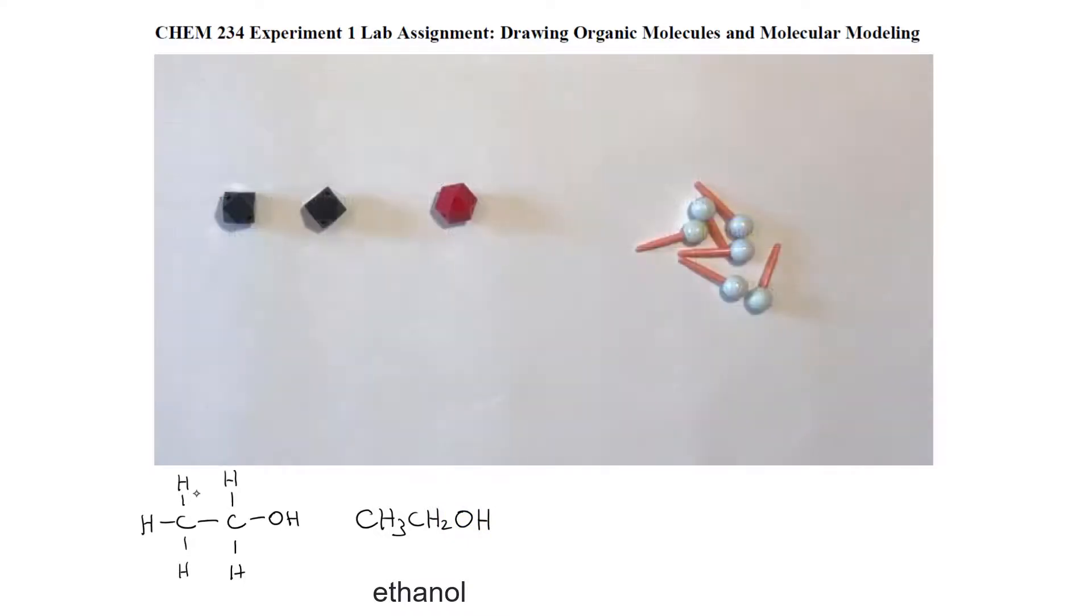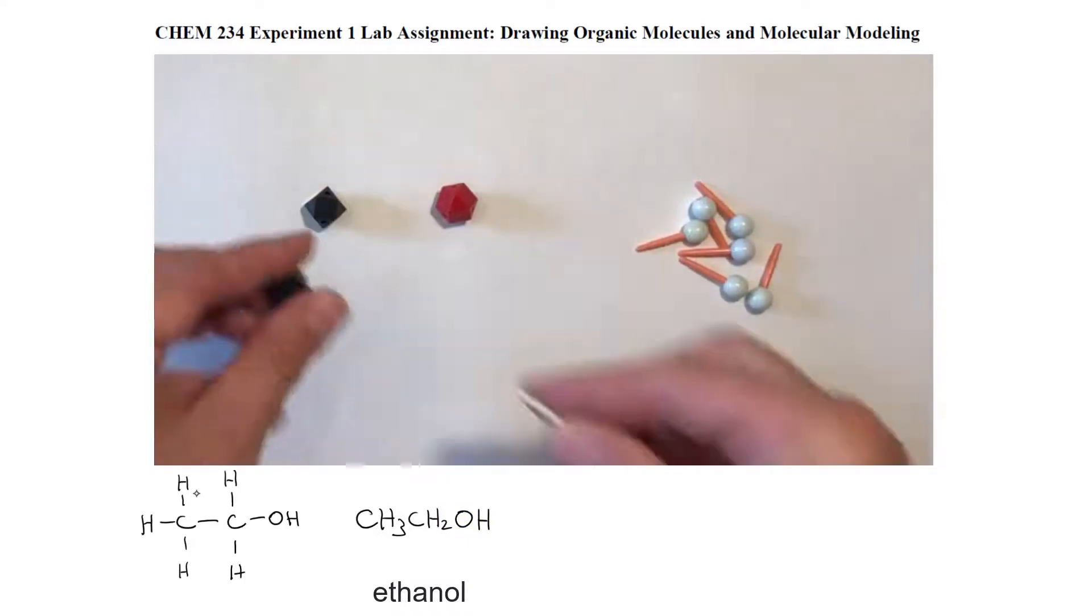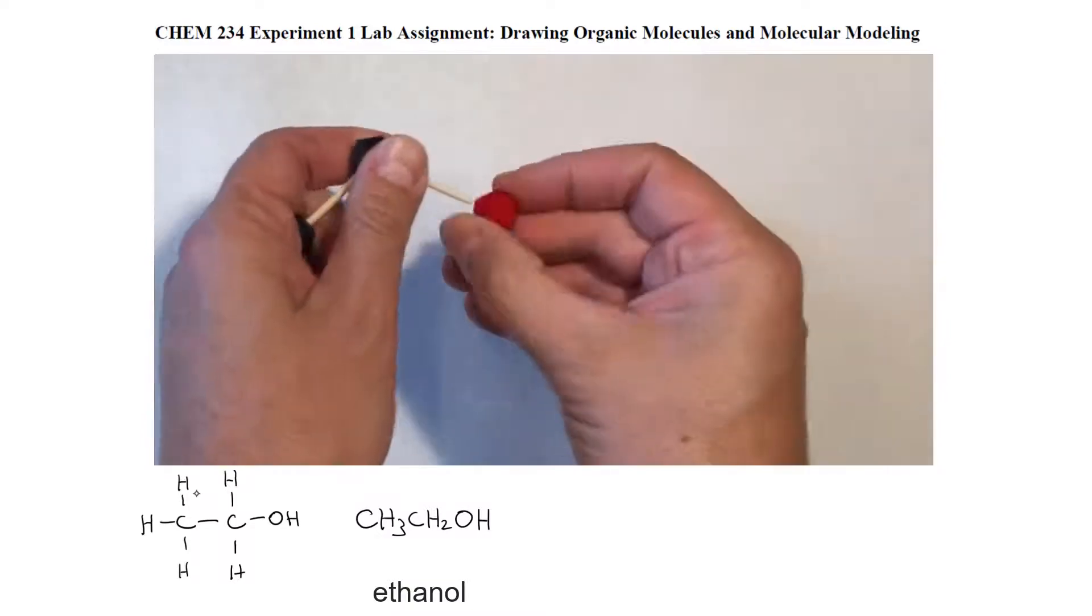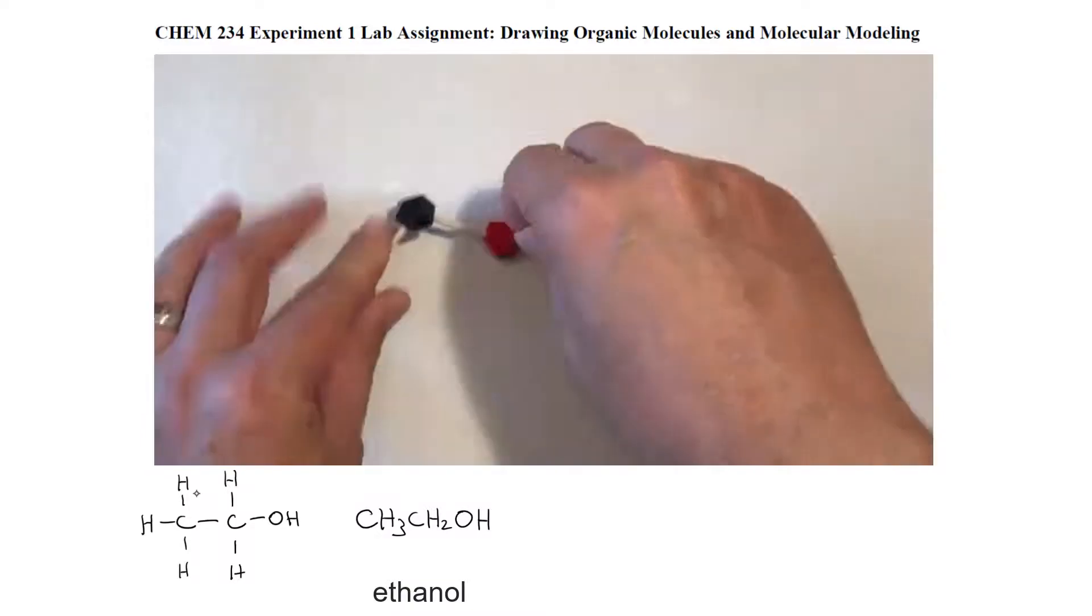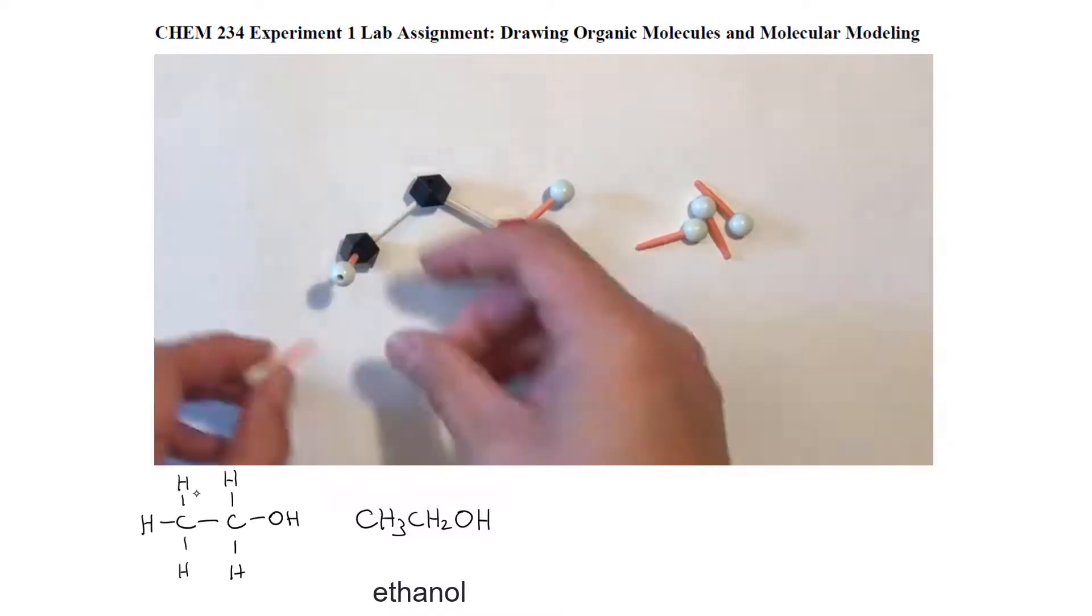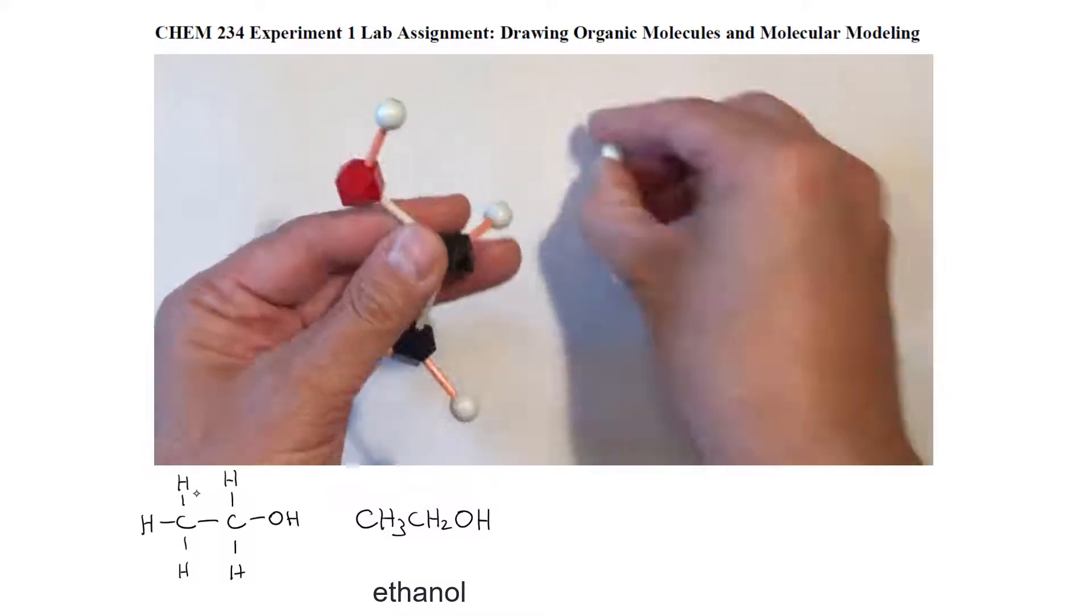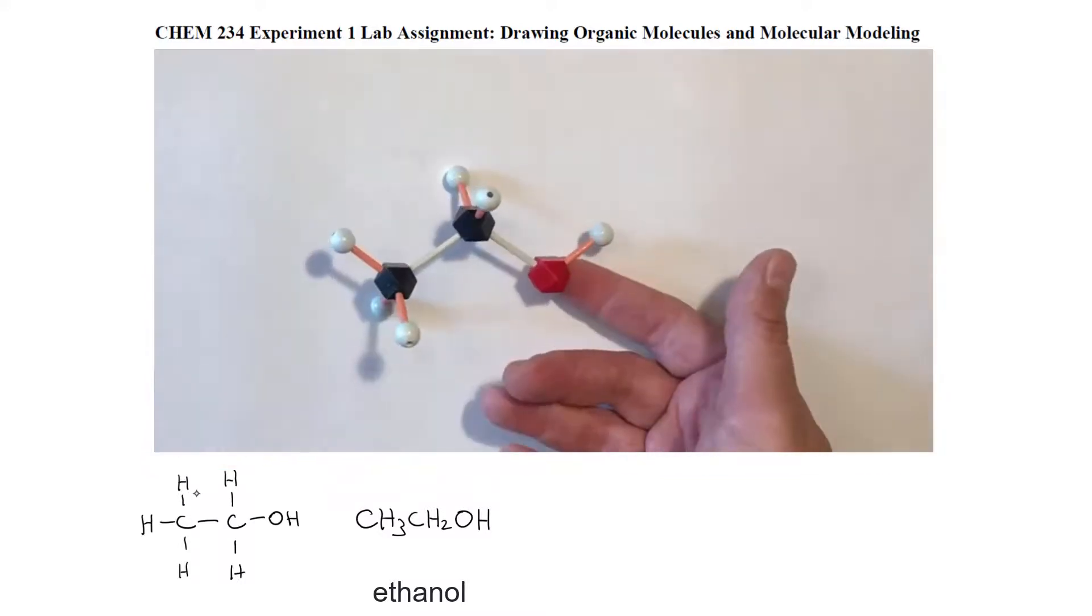So let's make a model of this. I'm going to grab two carbon atoms and an oxygen atom and hook them up to make the skeleton of the molecule. Then I'll put hydrogens in. And now we have our model of ethanol.